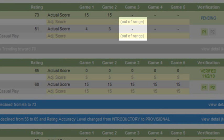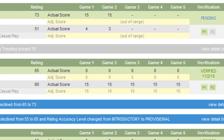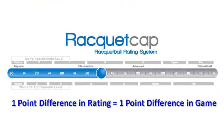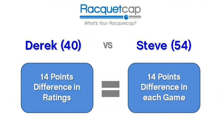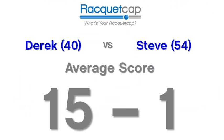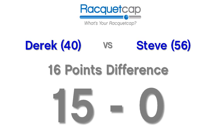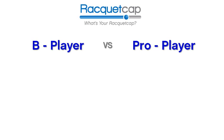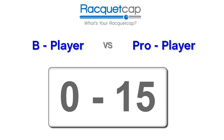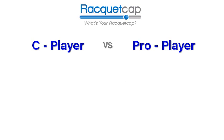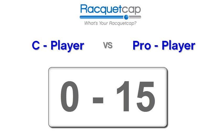You may also notice out-of-range matches. These are matches played where your opponent's skill level is too far out of range with your own, and these scores will have no effect on your rating. To explain, let's go back to the 1 RacketCap point equals 1 game point scenario. If there are 14 points difference between you and your opponent, the average score would be 15-1. If there are more than 15 points difference between your ratings, the average game score is going to be 15-0. Think of a B-level player playing against the best racquetball player in the world — their score will most likely be 15-0. Now if a C-level player played against the best racquetball player in the world, they will most likely have the same score. However, from those two scores, one cannot tell that the B-level player played better than the C-level player. This is why these game results cannot be used in the rating calculation.